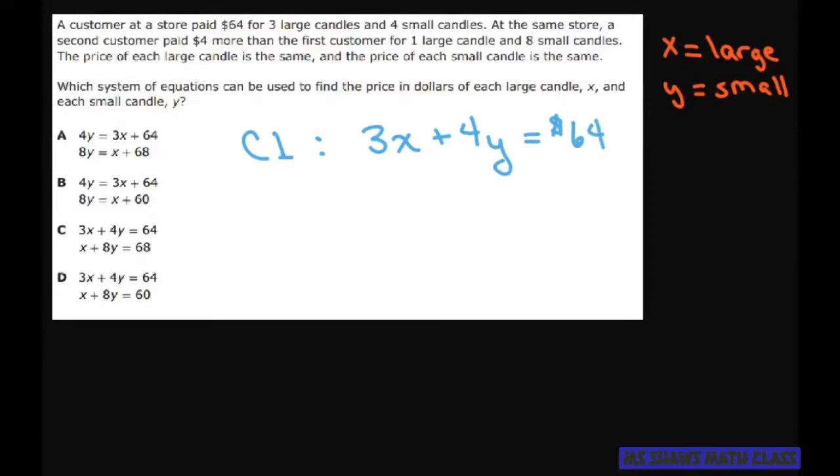All right, and then customer two, he or she paid four more than the first customer for one large and eight small. So he paid $64 plus four more.